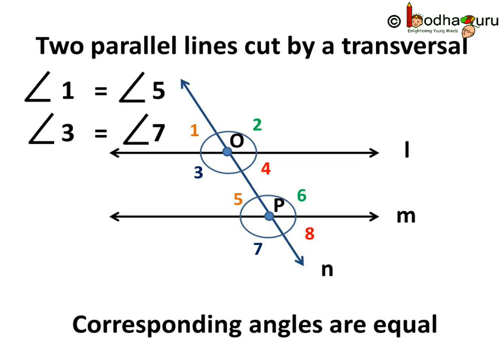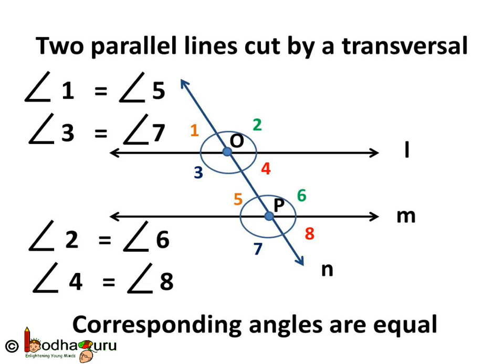When two parallel lines are cut by a transversal, then these pairs of corresponding angles are equal. The proof we will see later, but here we can say angle 1 is equal to angle 5 — both are at the top left corners. Angle 3 is equal to angle 7, which are at the bottom left corners. Angle 2 is equal to angle 6, a pair of corresponding angles at the top right corners. And angle 4 and angle 8 are also equal since they are corresponding angles at the bottom right corners of each intersection. So remember, there are four pairs of corresponding angles when two parallel lines are cut by a transversal, and they are in the matching corners and they are equal.